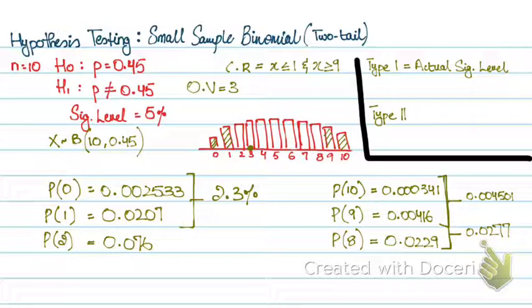And for type 2, it's basically my probability of the acceptance region. In this case, the acceptance region is from 2 to 8 inclusive, with the new p that will be given in the question. So my type 1 error is my actual significance level, and my type 2 error is all the way from 2 to 8 with the new p. And that's how I calculate my probability of the type 2 error. So that's it with a two-tail test for small sample binomial.